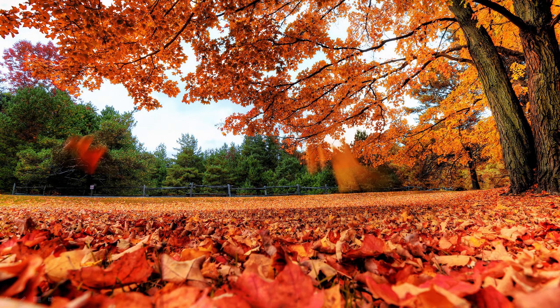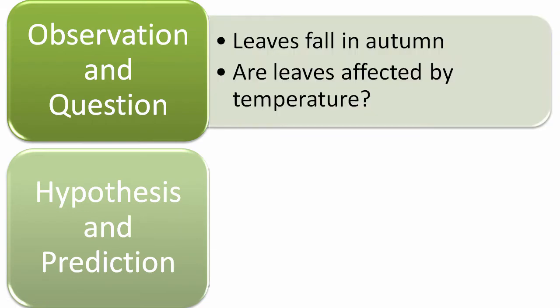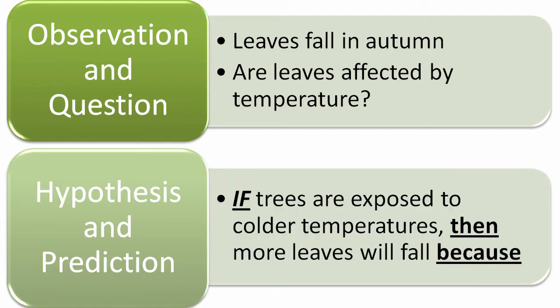So let's try it. Here we have a pretty typical autumn scene, and there are lots of things you might observe in this picture, and many questions as well. One of the most common questions students see is: why are the leaves falling off the trees? You've made an observation and a question — leaves are falling in the autumn. Why are leaves perhaps affected by temperature? Certainly it's getting cooler. So our hypothesis: if trees are exposed to colder temperatures, then more leaves will fall, because maybe the colder temperatures are freezing capillaries that hold the leaves together and they degrade.